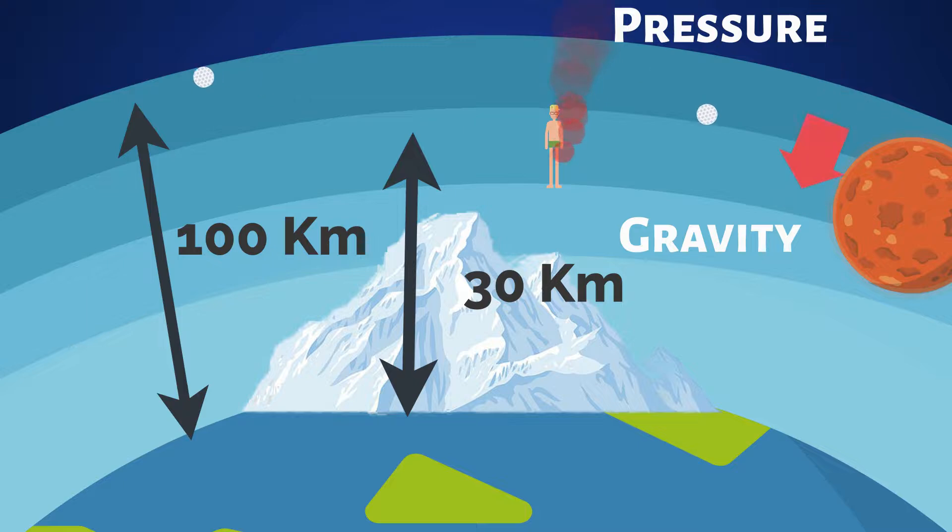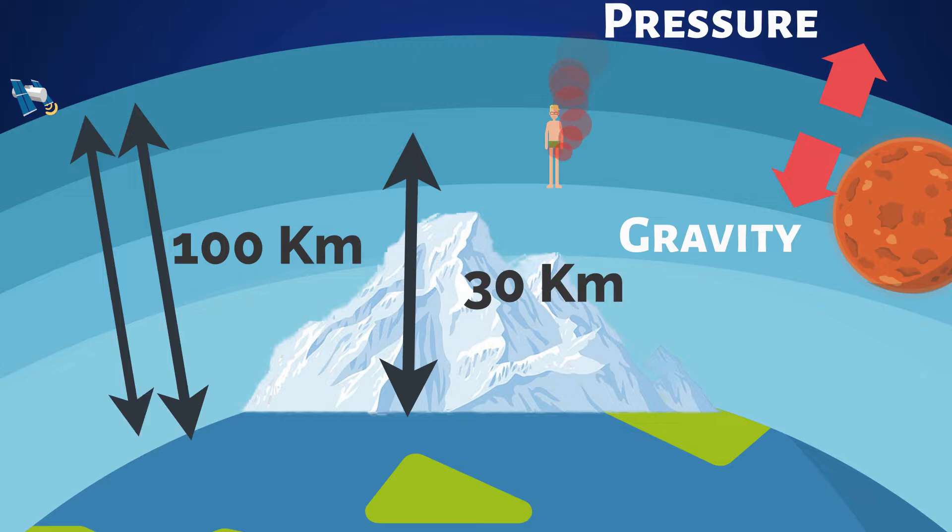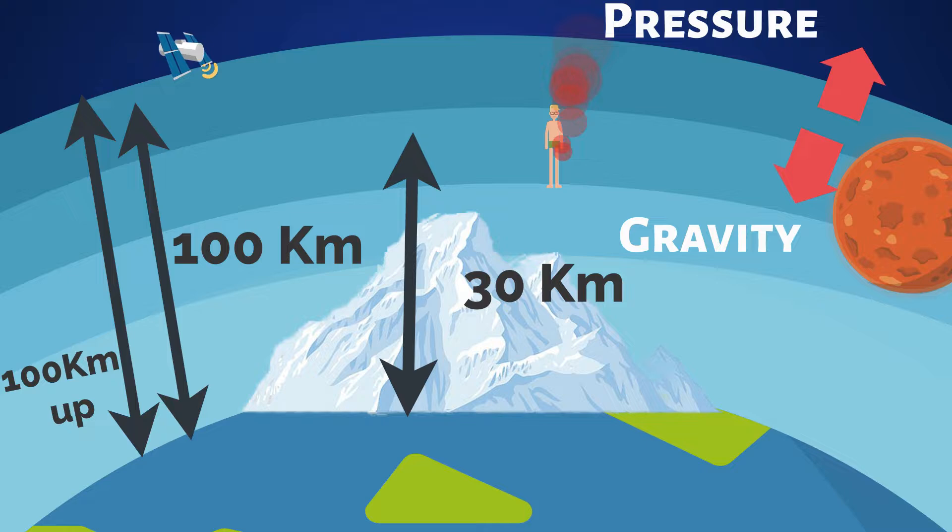So the air pressure and gravity are in an equilibrium. This is the edge of the traditional atmosphere. At 100 kilometers up, we're not far away from the satellites in low Earth orbit. The pressure is so low that an object can orbit the Earth with almost no friction.